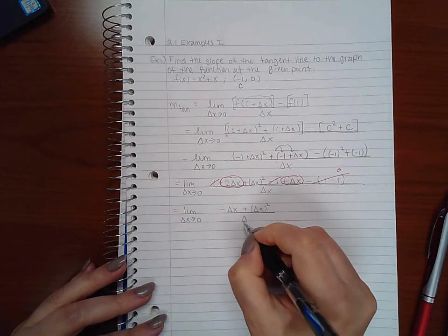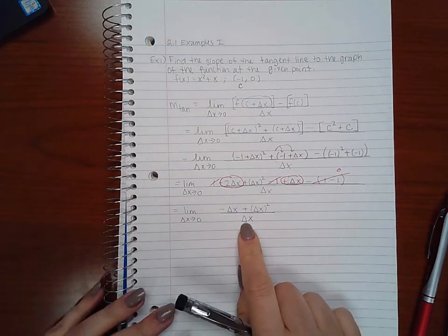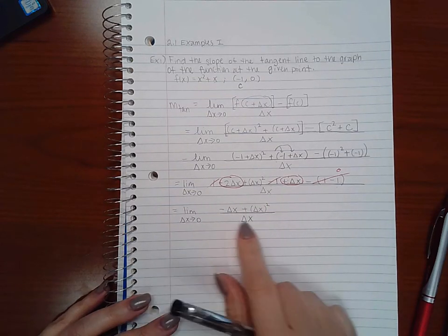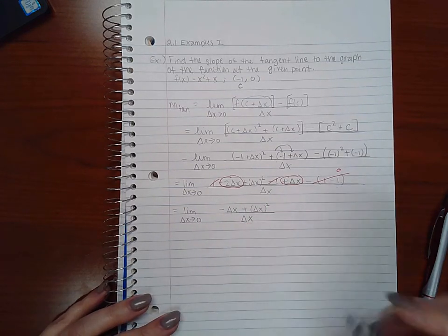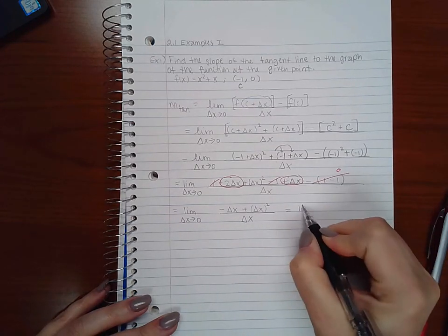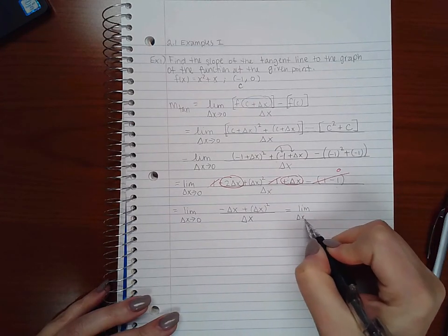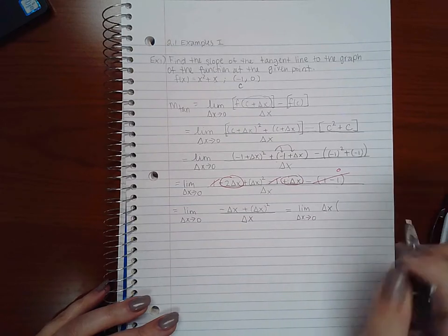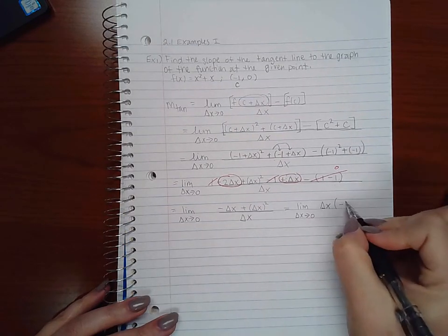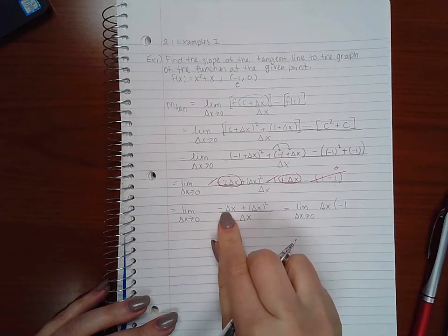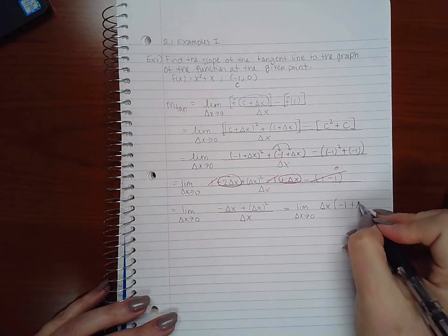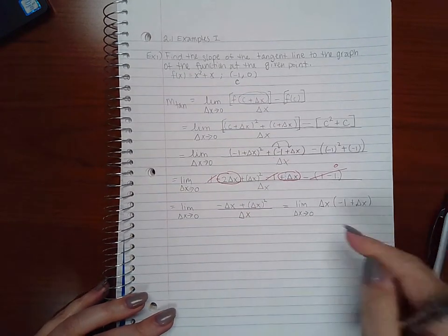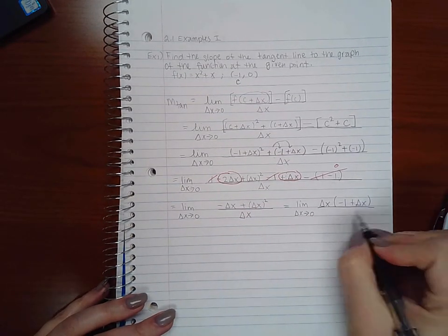Now in order for me to take this limit, I do have to reduce the fraction by delta x since your denominator can't go to zero. So what I'm going to do here is I'm going to take what's in the numerator and factor out a delta x, so that delta x times a negative one will give me negative delta x, and delta x times another delta x will give me delta x squared. So I'm just factoring out a delta x.